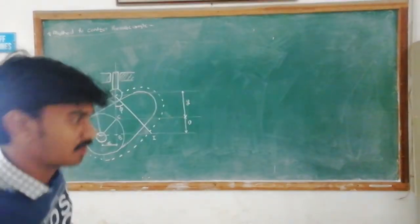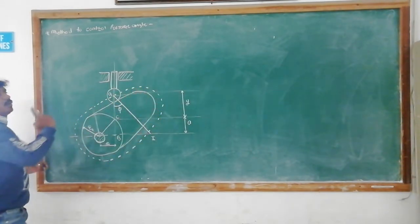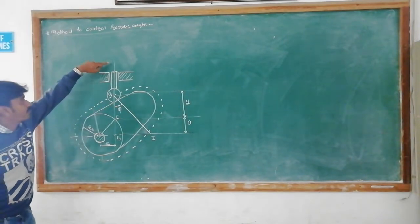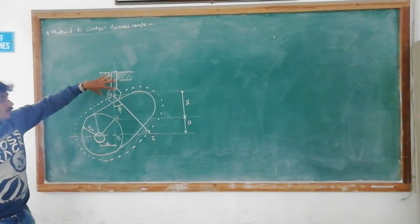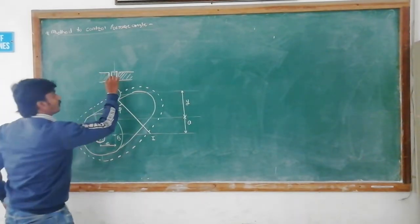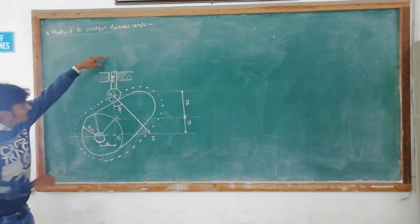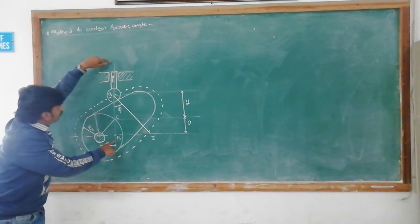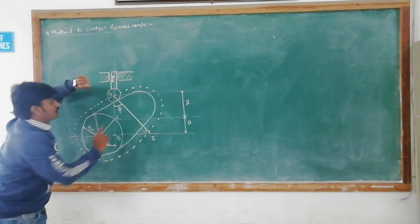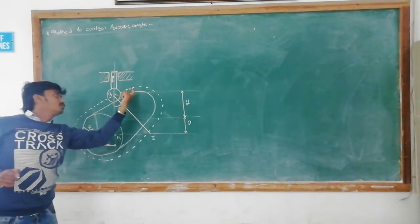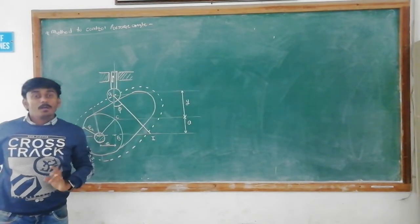So what is the pitch curve? This dotted line is called the pitch curve. This is the follower, and this vertical line is the line of action of the follower. The line which is normal to the pitch curve — the angle between these two lines is called the pressure angle.